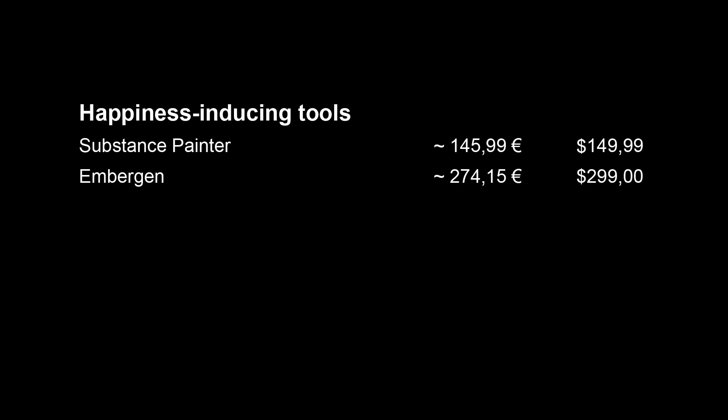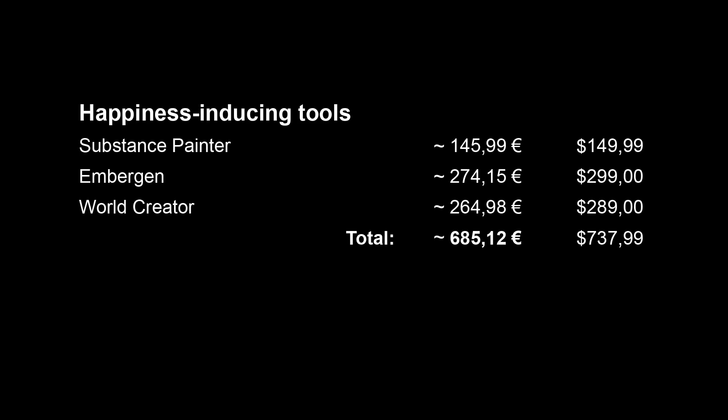You'll find complete satisfaction with these specialized external tools. Substance Painter, offering excellent projection painting, for approximately $150. EmberGen, ideal for creating realistic fire, smoke and explosions, at $299. And World Creator for landscapes at $289. The total for these tools comes to approximately $740, and with discounts often available, the total cost reduces to approximately $500. All three programs come with permanent licenses. Adding all add-ons for Blender 4 with these tools totals around $1,380, or just $950 with a discount.